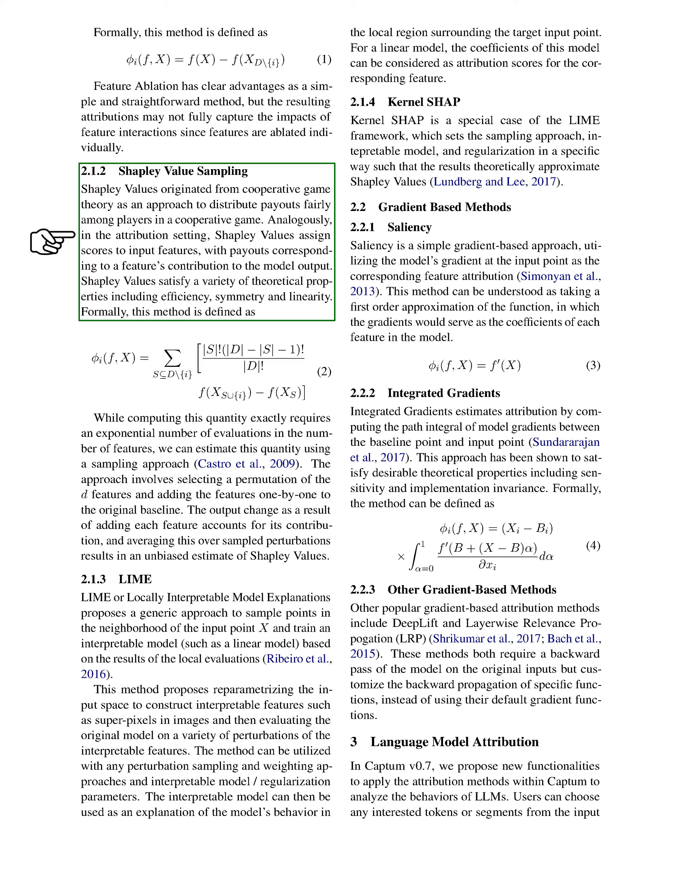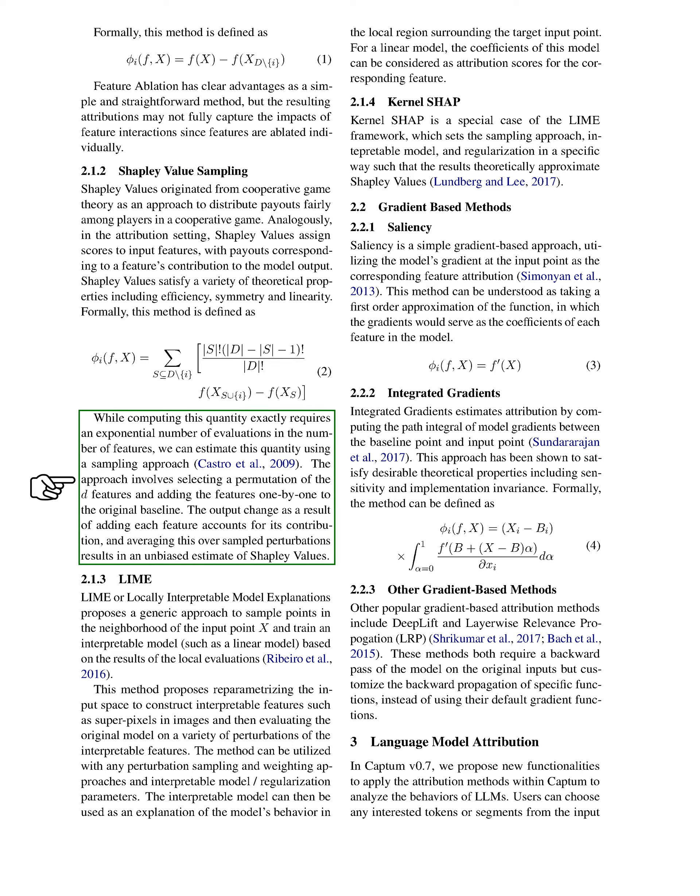Another method is Shapley value sampling, which comes from cooperative game theory. Shapley values assign scores to input features, with the scores representing a feature's contribution to the model output. Shapley values have several theoretical properties, including efficiency, symmetry, and linearity. Calculating this exactly would require an exponential number of evaluations, but we can estimate it using a sampling approach — selecting a permutation of the D features and adding them one by one to the original baseline. Averaging this over sampled perturbations gives an unbiased estimate of Shapley values.